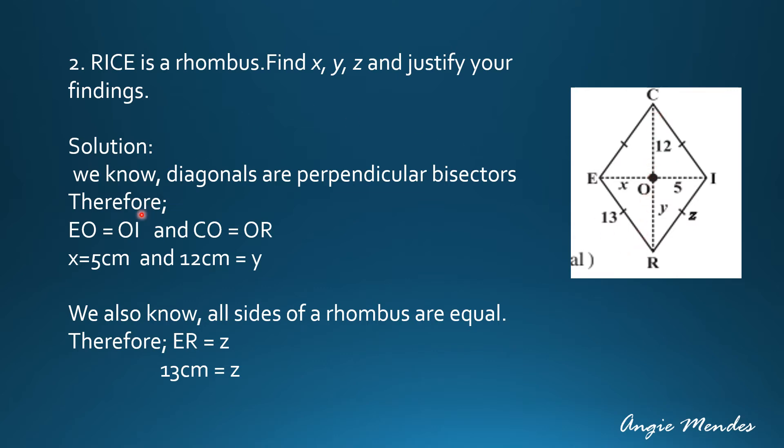We have been given what is OI that is 5 cm and we know the value of CO which will be equal to OR. It is given 12 cm. So X is equal to 5 cm and 12 cm is equal to Y. What we have done here is substituted the value of EO. EO is X, OI is 5. We have got CO is 12 and OR is Y.